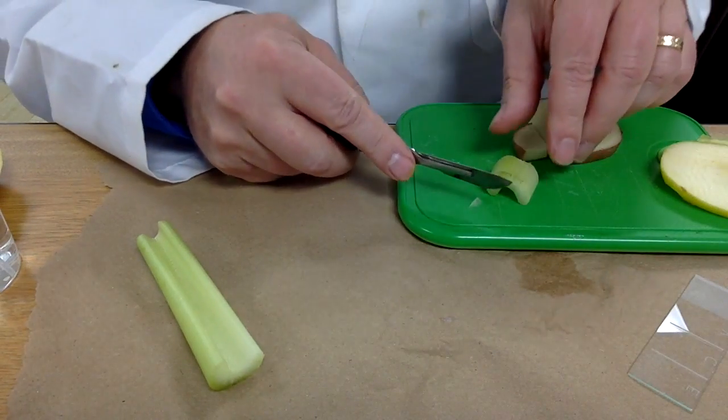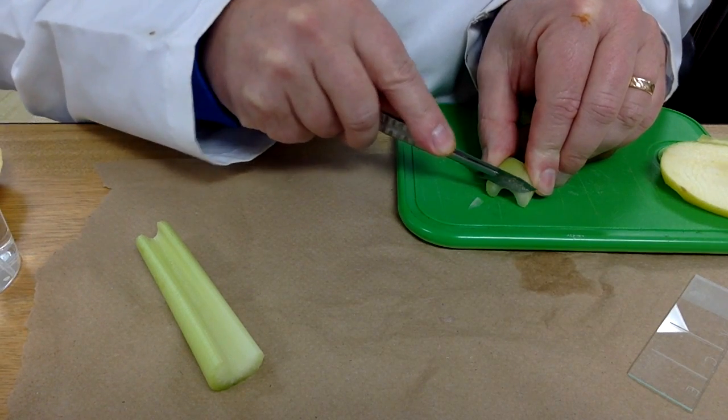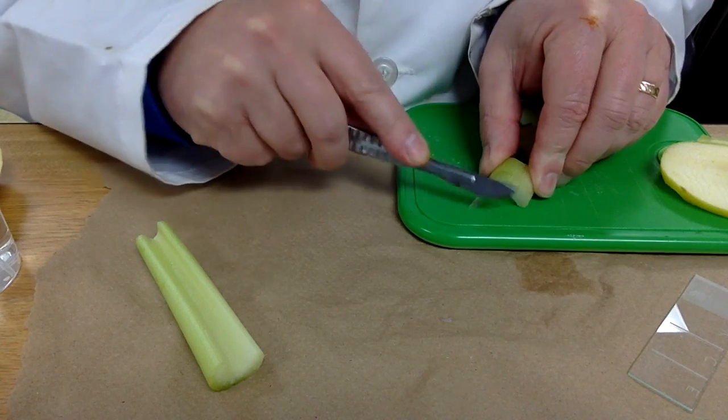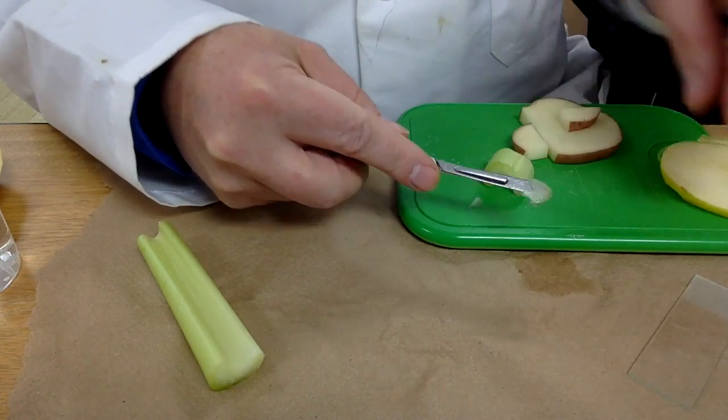I'll show you from this angle how to get a very thin cross section. That can be placed on the microscope slide.